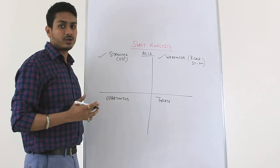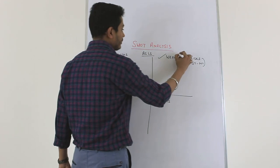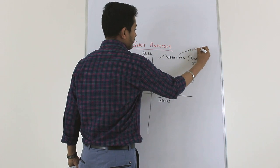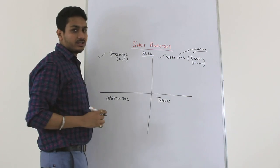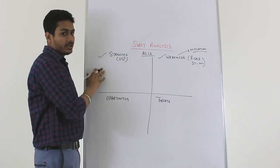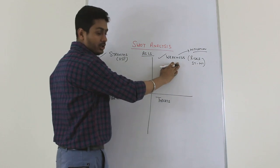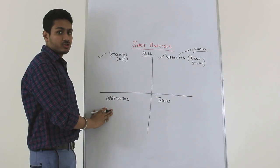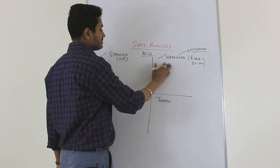For every weakness an organization has, they need a corresponding mitigation plan. The intent is that if you mitigate a weakness, it can become a strength in the present, or it might give you the lever to exploit an opportunity in the future. Strengths and weaknesses must be as-is and related to the organization.